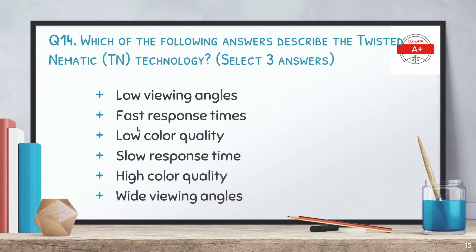The next question is: which of the following answers describes the twisted nematic or TN technology? Select three answers. The options are low viewing angles, fast response times, low color quality, slow response time, high color quality, and wide viewing angles. The answers are low viewing angles, fast response times, and low color quality.